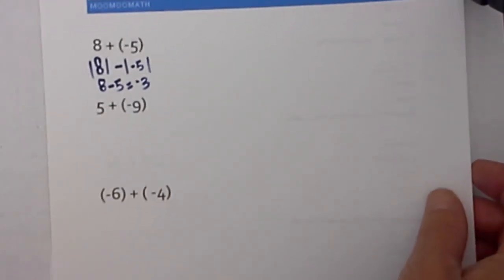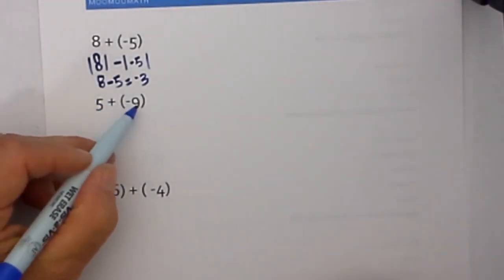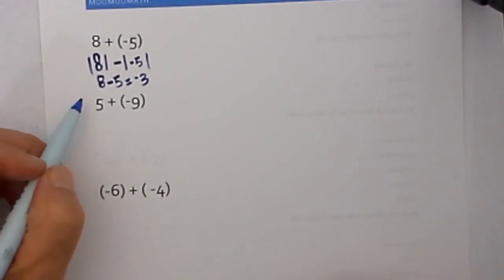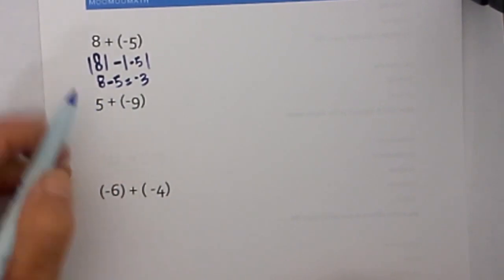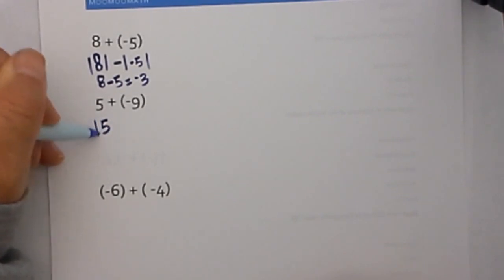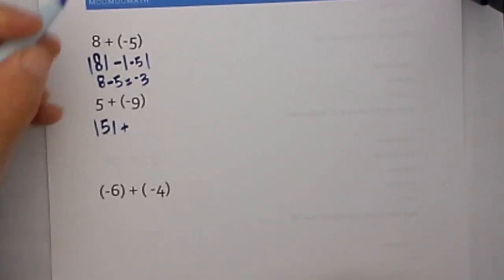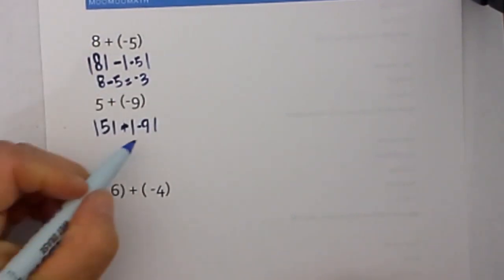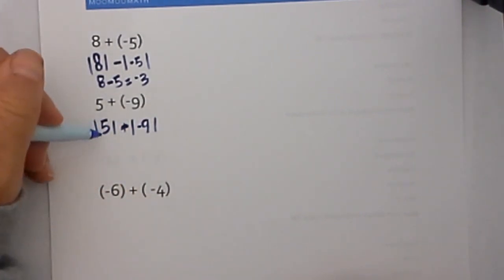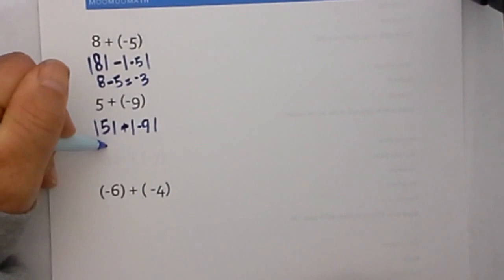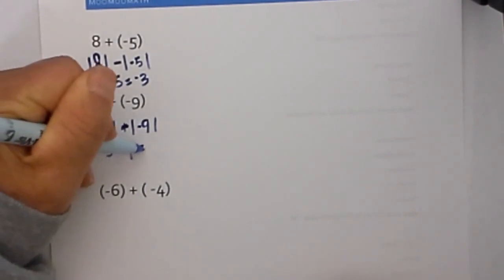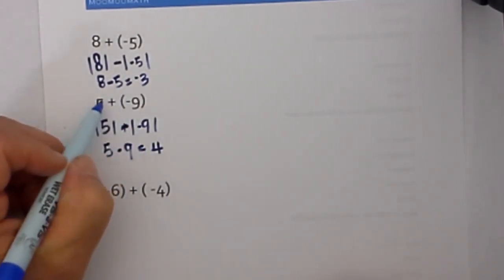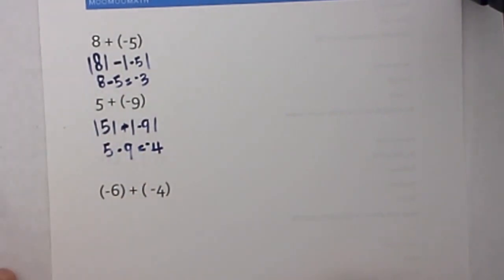Let's look at another example. We have 5 plus negative 9. Is the problem addition? Yes. Are the signs the same? No. You have a positive 5 and a negative 9. So we will subtract the absolute value of both numbers: the absolute value of 5 minus the absolute value of negative 9, which becomes 9 minus 5, equal to 4. Since 9 is larger than 5, it will become negative 4.